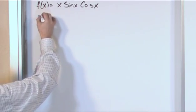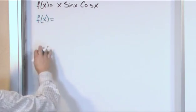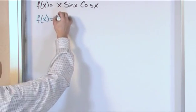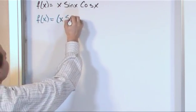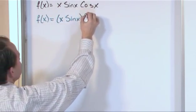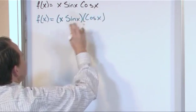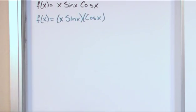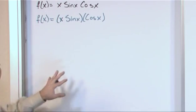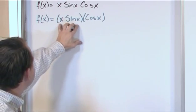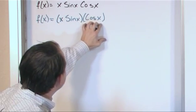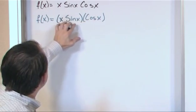If you rewrite this guy as follows, I think you might understand how to do it. x times the sine of x times the cosine of x. Exactly the same thing, right? But here when I put parentheses, I'm kind of implying to you that this is sort of one function. This is sort of function number two. So this is function multiplied by function.